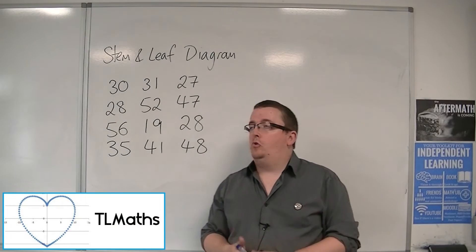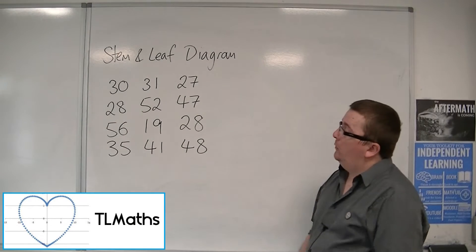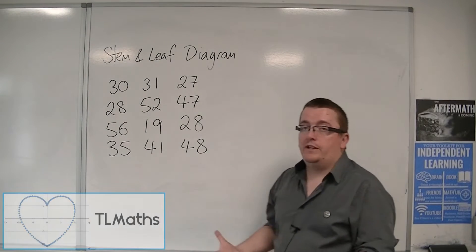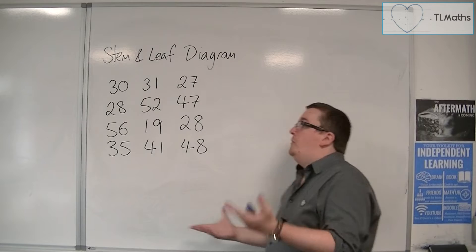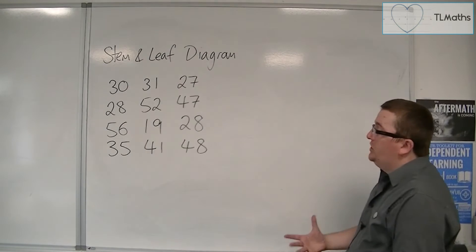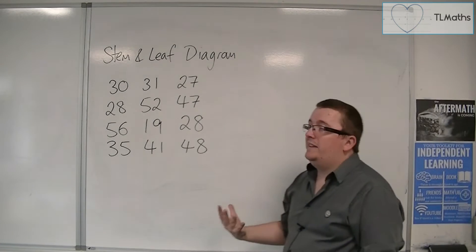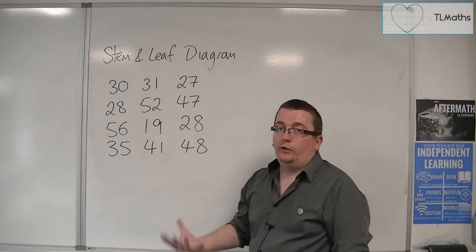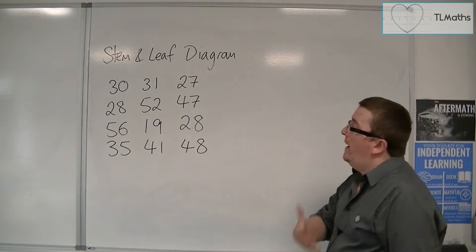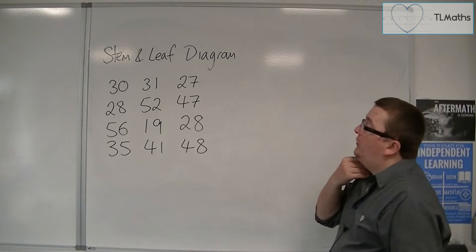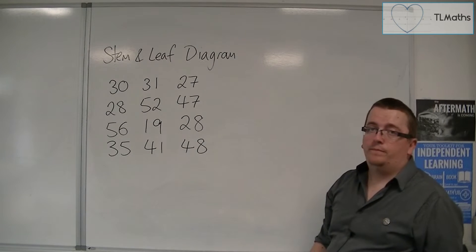When you have a set of raw data like this, where you've just got a list of numbers, it's very difficult to determine what that data really looks like. A good way of representing it is via a stem and leaf diagram.